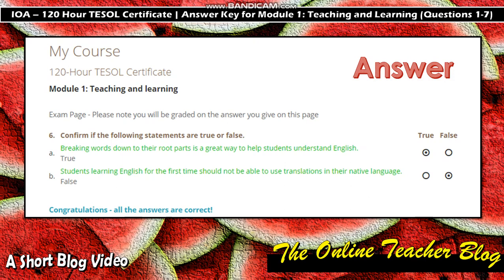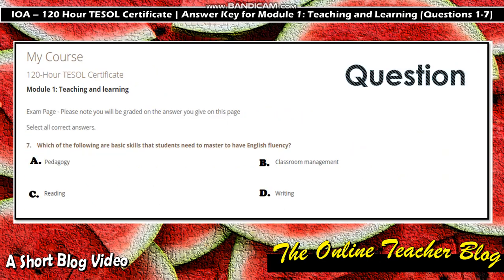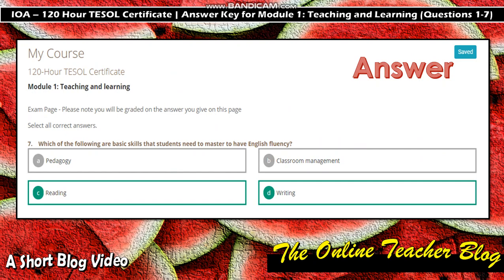Question 7: Which of the following are basic skills that students need to master to have English fluency? A) Pedagogy, B) Classroom management, C) Reading, D) Writing. The answer is letters C and D: reading and writing. So to have English fluency, you need to be able to read and to write.